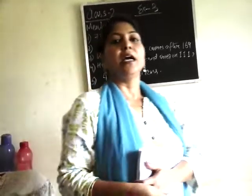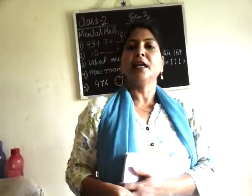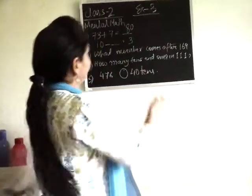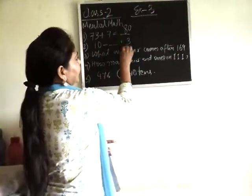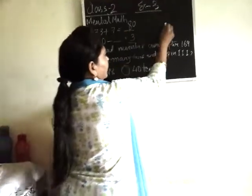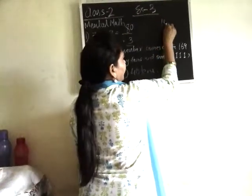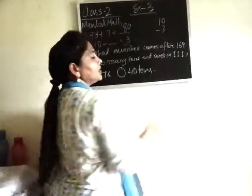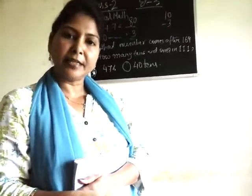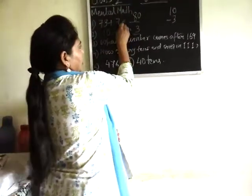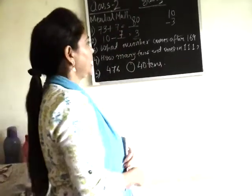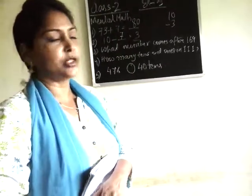The next question: from 10, how much will you subtract to get 3? You will subtract 3 from 10. So whatever answer you get, you will write it there. The answer will be 7. So we subtract 3 and get 7.